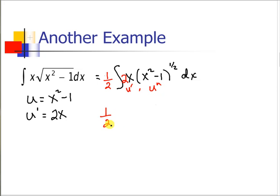So we get 1/2 times x squared minus 1 and now we add 1 to the exponent. So we have 3/2. Divide by the new exponent plus c.